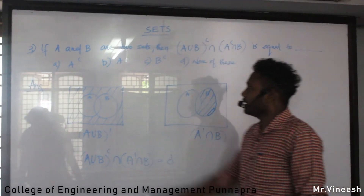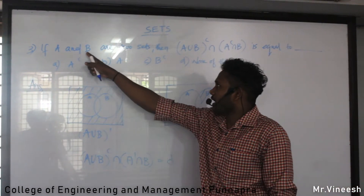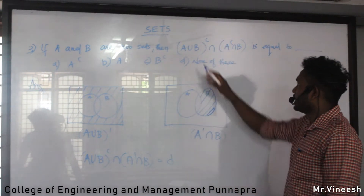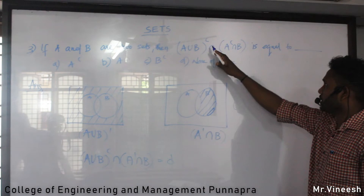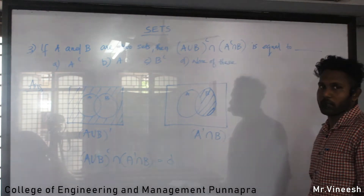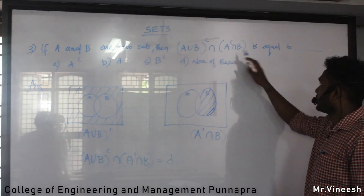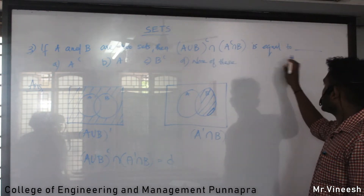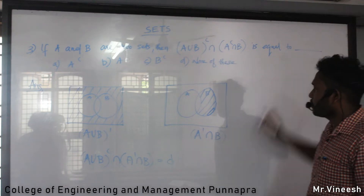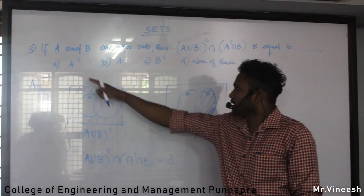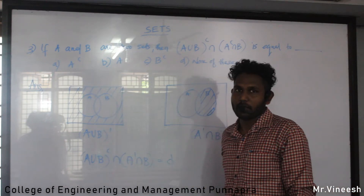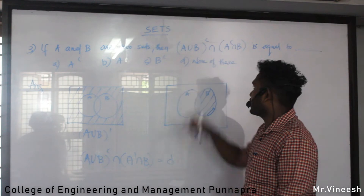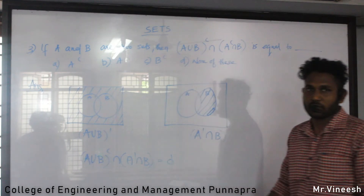If A and B are two sets, then A complement intersection B is equal to what? Option A: A complement. Option B: A. Option C: B complement. Option D: A.